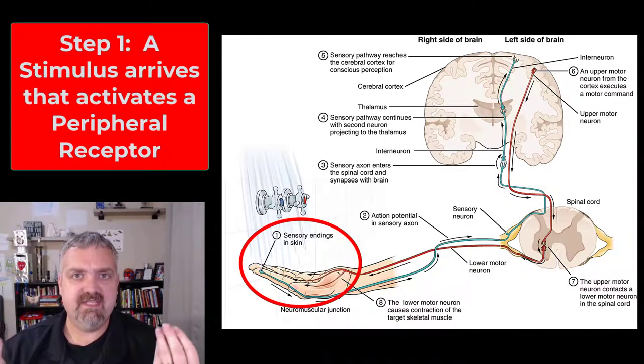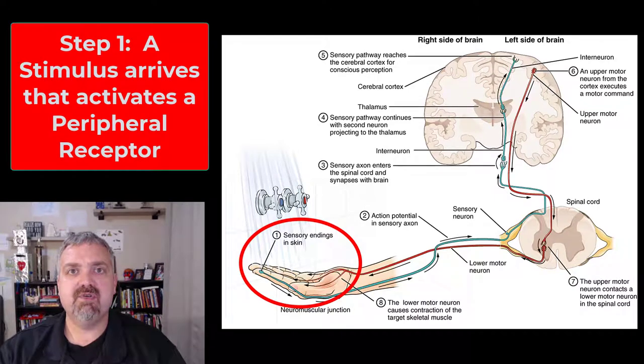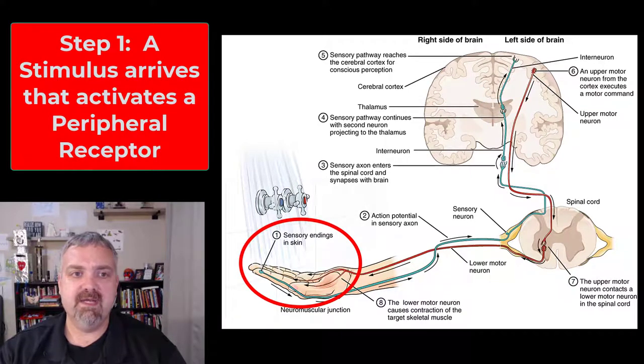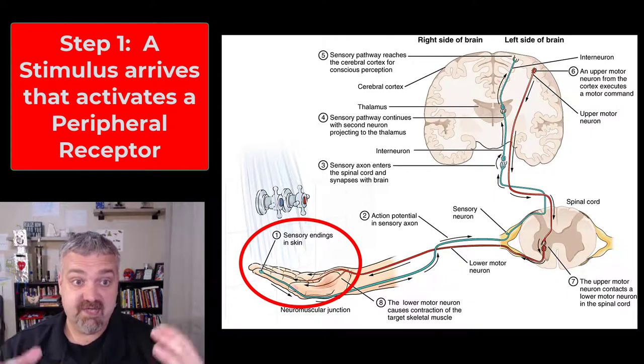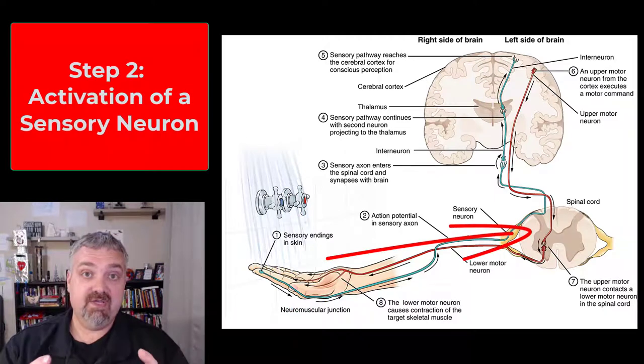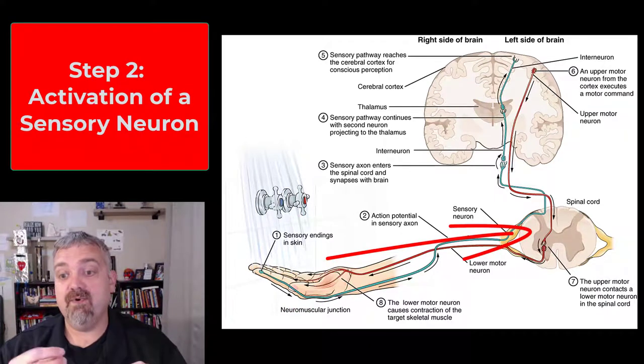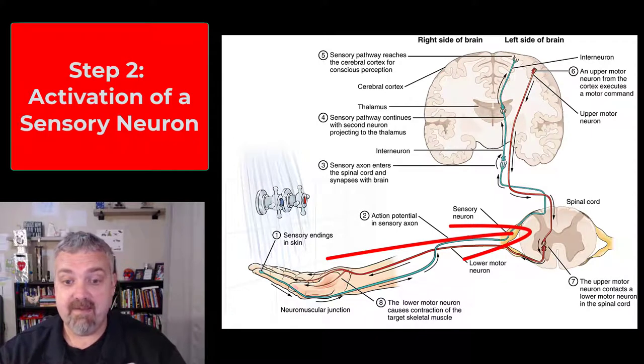So here we see number one, we have these peripheral sensory receptors in our skin, primarily temperature receptors or thermal receptors we're worried about here. So step number one, there's a stimulus that's going to activate those receptors. And then the activation of those receptors is going to send information down an afferent or sensory nerve. So here we see the sensory nerves are going to be the blue ones there that are going to send that signal up towards the brain.